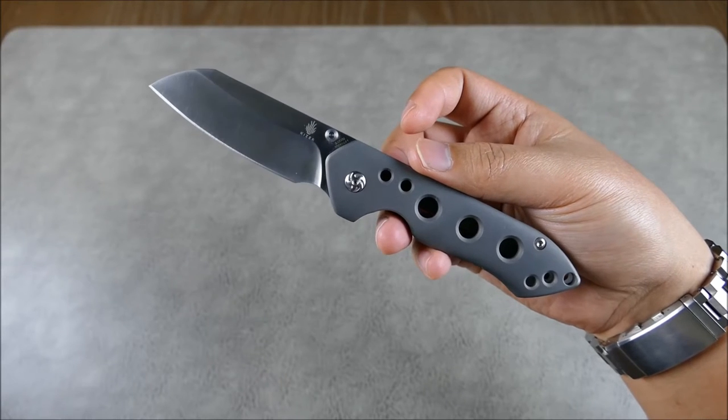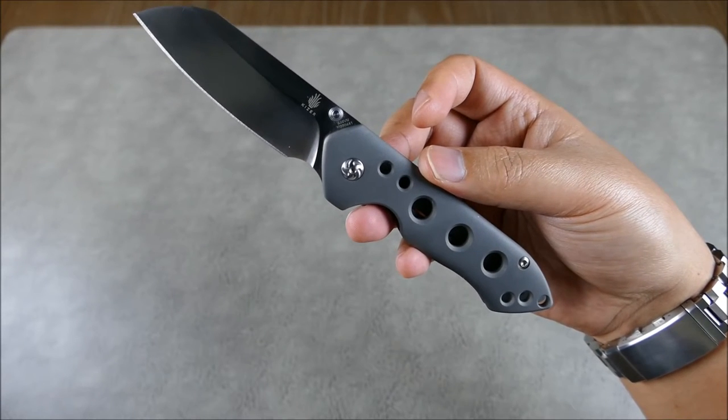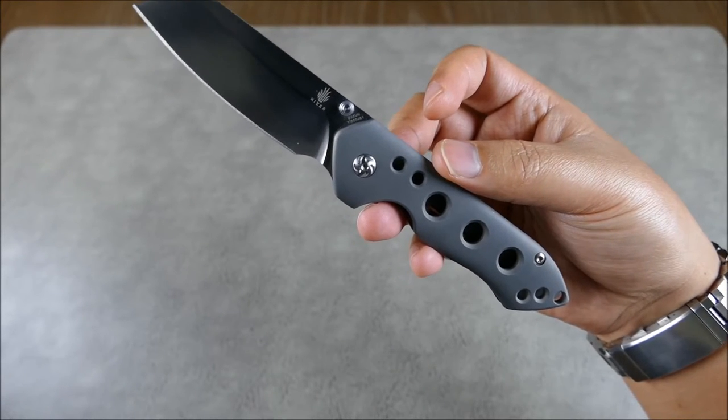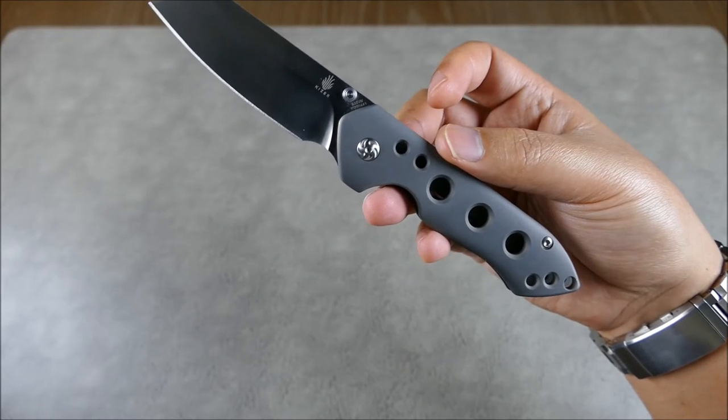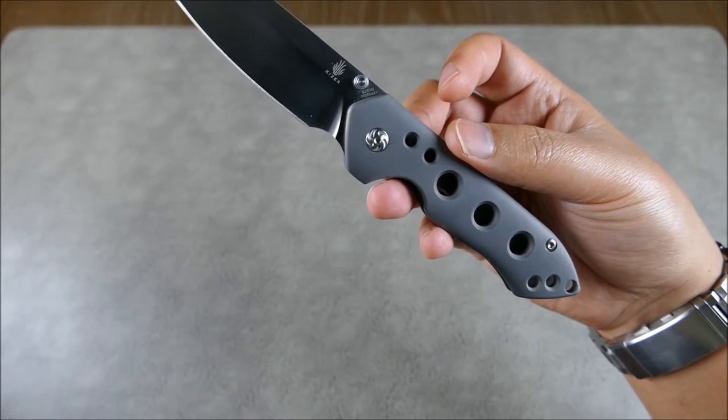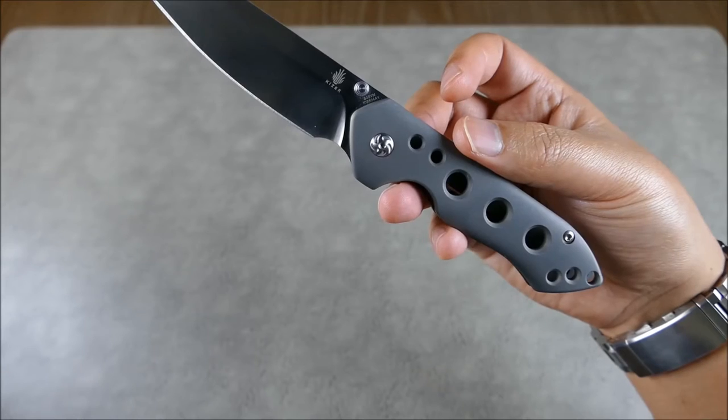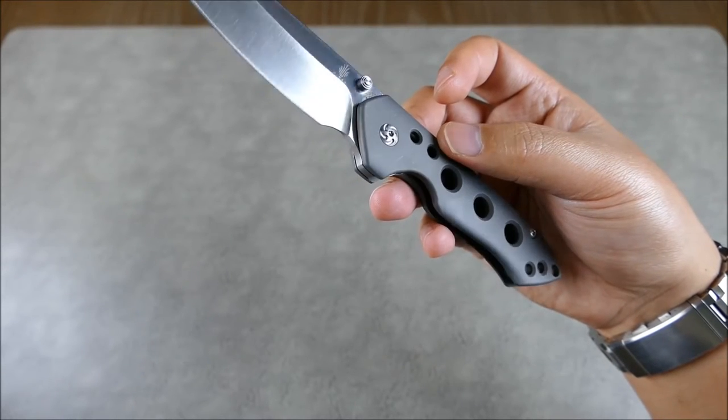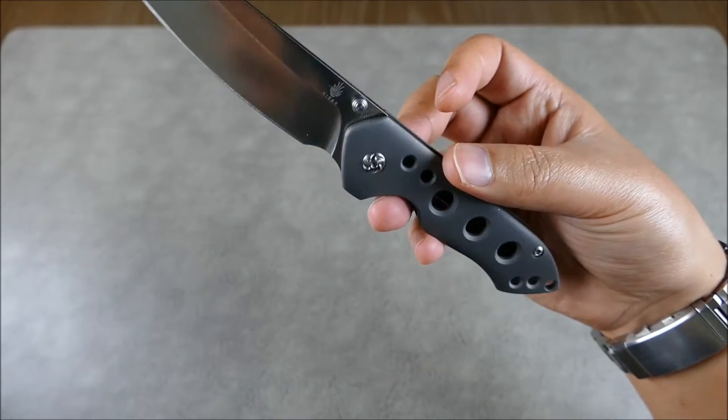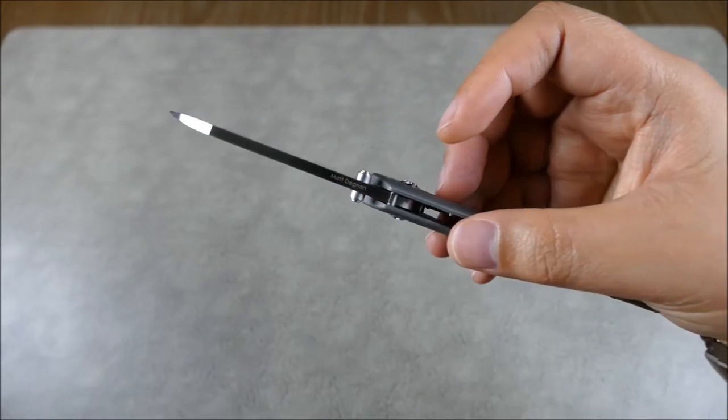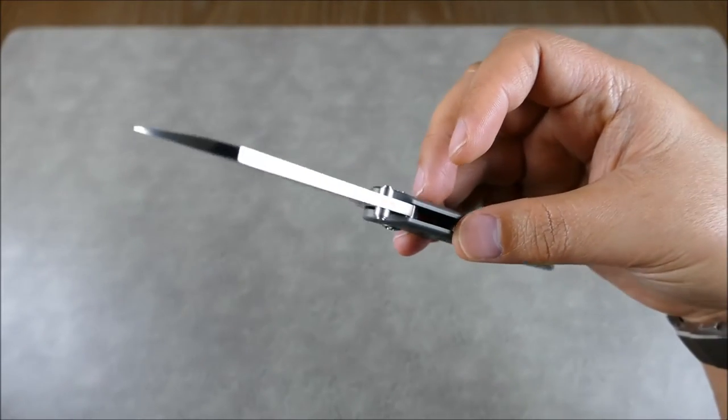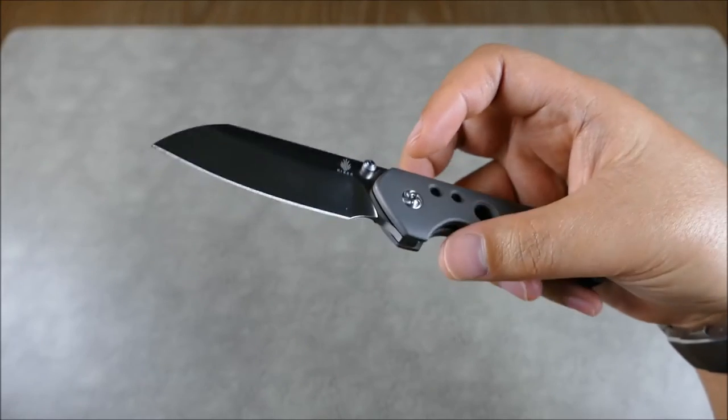Let's go ahead and cover a couple of those specs. This is using, of course, the very popular S35VN Crucible steel, which is really nice stainless steel. It has a sheepsfoot blade, a tall grind with a nice satin finish.